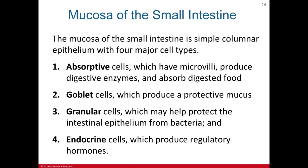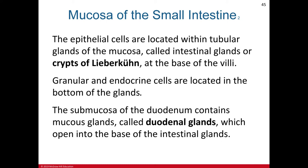The four major cells of the duodenum: absorptive cells have microvilli, produce digestive enzymes, and absorb digested food. Goblet cells produce protective mucus against the acidity of chyme. Granular cells help protect the intestinal epithelium from bacteria. Endocrine cells produce regulatory hormones needed for small intestine function. The epithelial cells are located within the tubular glands of the mucosa called intestinal glands, or crypts of Lieberkühn, which will be examined in the laboratory.